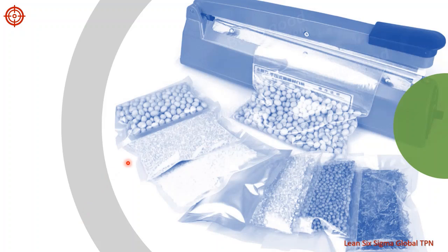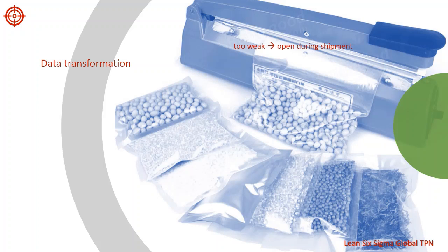When we want to use normal capability tools but our data are non-normal, we can attempt a data transformation to satisfy the normality assumption. To illustrate, consider this process that seals bags of nuts. Operators insert each bag between two metal bars, one of which is heated, and seals the bag. If the seals are too weak, the bag may open during shipment. If the seals are too strong, customers may have difficulty opening the bags.